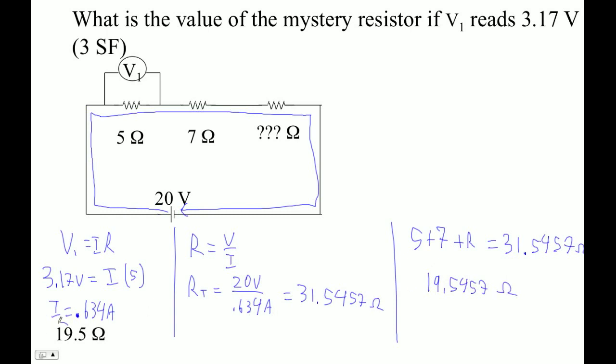And with 3 sig figs, we'd have to say 19.5 ohms. There you go. That's a certain political candidate smiling at us.